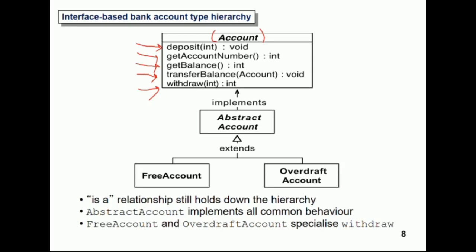Some of that behavior needs to go into the abstract account — that's where all the common behavior should go. Any specialized behavior will go into the two types of accounts: the overdraft account and the free account. Usually a bank will have lots of types of accounts, but this is obviously a simplification, so I've only got two types.